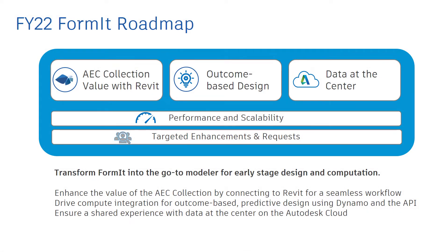Formit's goal is to be the go-to early-stage design tool for architects and designers. We have three key initiatives this year: one, enhance the value of the Autodesk ecosystem and the AEC collection by enhancing the connection to Revit for a seamless workflow; two, continue to develop compute integration for outcome-based predictive design using Dynamo and Formit plugins — readily available and accurate analysis feedback early in the design process means better, more efficient design outcomes later on; and three, promote data at the center and ensure a shared and trusted experience on the Autodesk cloud. Additionally, we continue to support the core interests of Formit through performance and scalability enhancements and by addressing customer wishlist items.